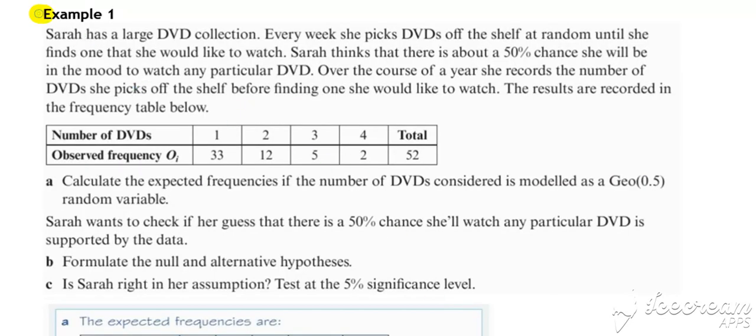OK, so here's our first example. So Sarah has a large DVD collection. She picks them off until she finds one that she'd like to watch. So repeated trials until a success. There's a 50% chance. And here's our observed frequency of the number of DVDs she had to pick off the shelf in order to find one that she wanted.